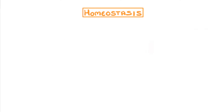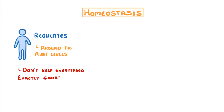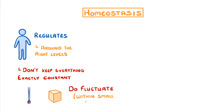To achieve all of this, our body regulates everything and makes sure that everything is kept around the right levels. That said, we don't keep everything exactly constant — for example, our temperature and glucose levels do fluctuate, but only within small bounds.